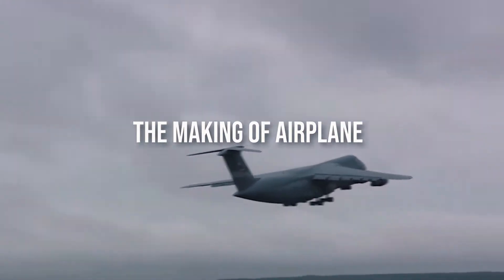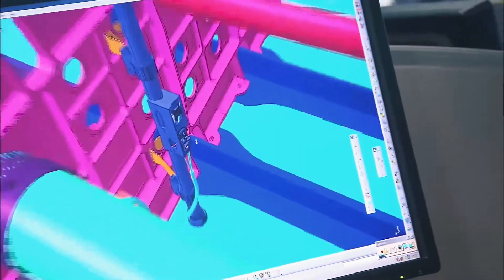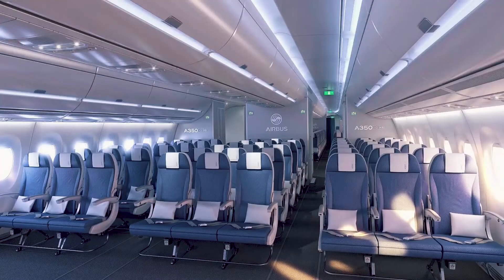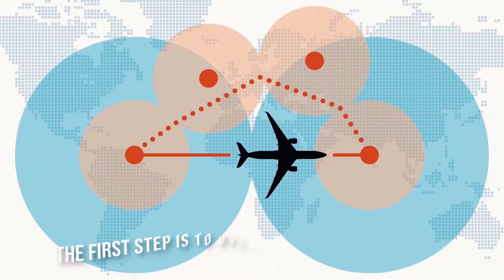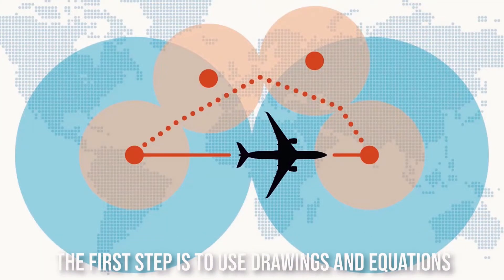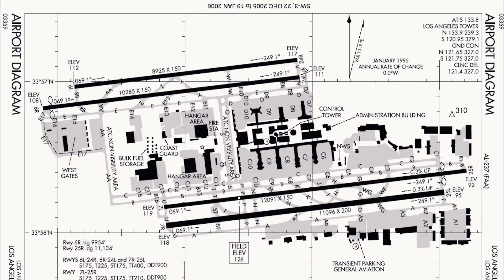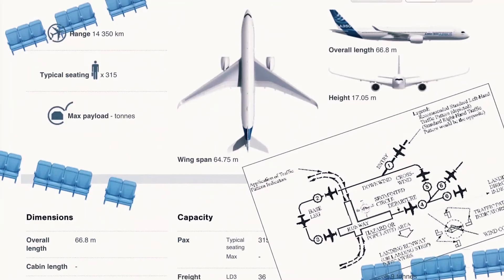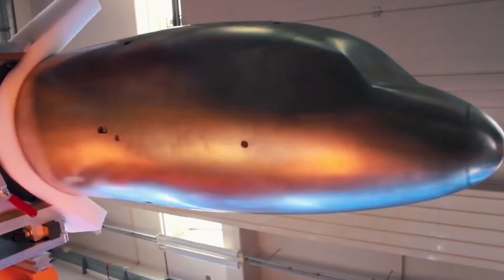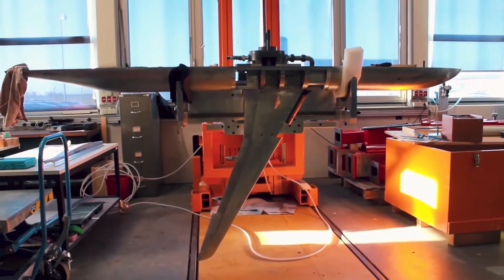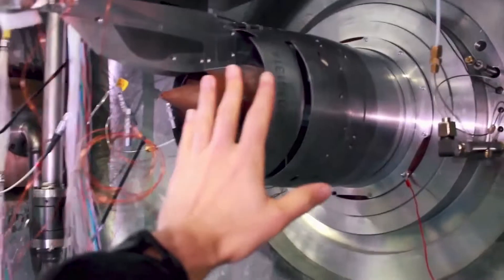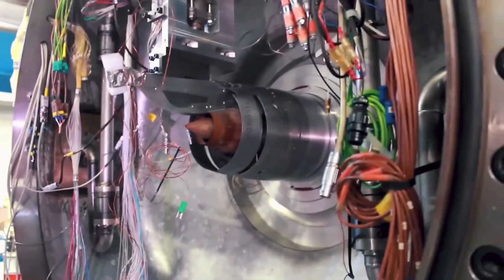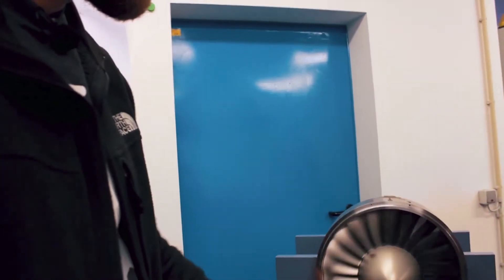The design stage. The purpose and specifications of the aircraft are established during the design and planning process. The first step is to use drawings and equations. The enterprise uses computers to create and plan the design. The simulation phase then begins, using computers to perform the initial simulation of the aircraft. A small model of every design — a specific part of the plane — is then created and tested in a wind tunnel to test its aerodynamics. The design and planning stages can take up to four years.